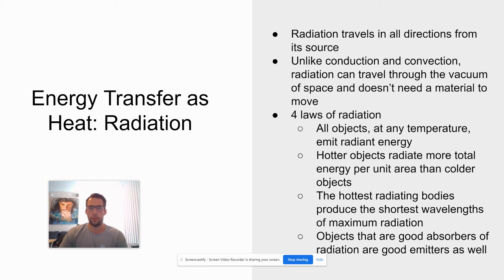Hotter objects radiate more total energy per unit area than colder objects. So if an object is really hot, it's going to emit more radiation.